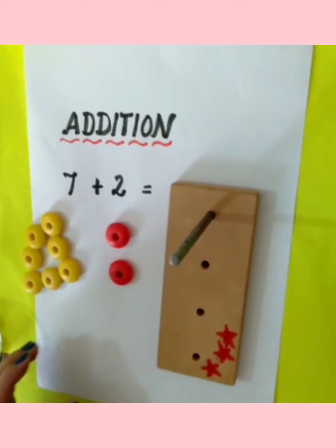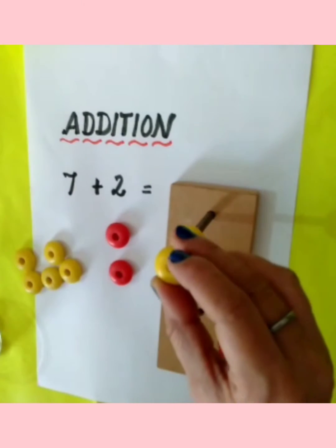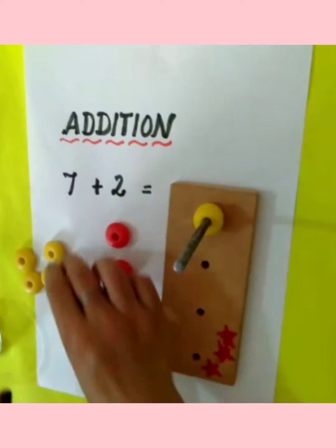So I will add it by using a bead. This is a single digit sum, so we will use a single rod. Let's count: one, two, three.